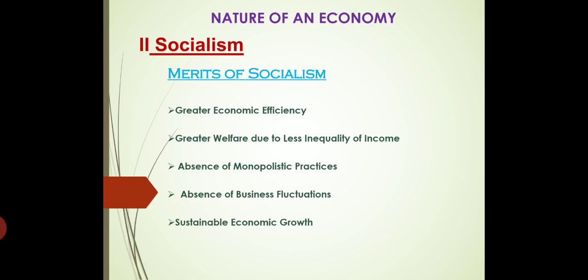Next is absence of business fluctuation. There will be ups and downs in the business, but with government support, the downfall will happen in very few cases, because the government knows how to make a settlement if they are facing losses. Then there is sustainable economic growth — sustainable means it's not only focusing on business growth but also on different areas like customers, employees, and overall overall growth. If overall growth is there, then economic development will be at a faster pace.